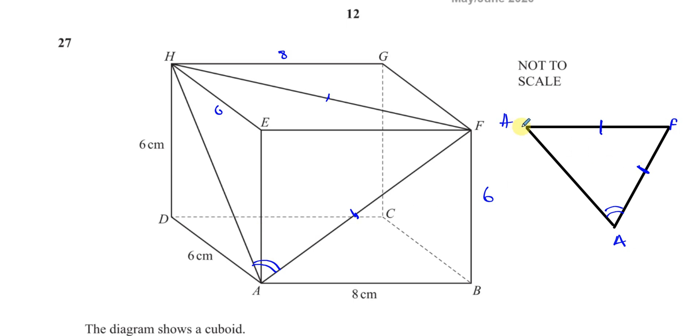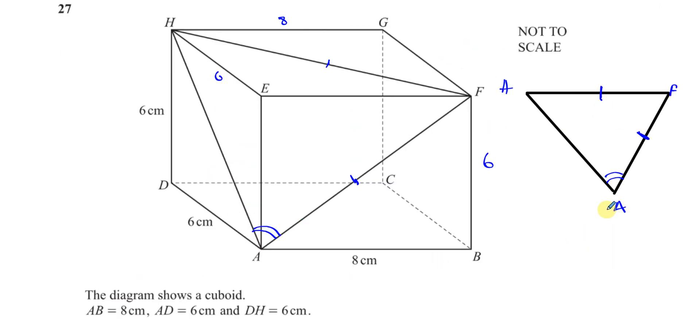We have to find this angle here. This side and this side seem to be the same length because they're both diagonals of the same dimension, basically a rectangle. Because this is 8 by 6 and here we have, this is also 8 by 6, so these diagonals will be the same length. So if we can find the length of these three diagonals, AH, HF, and FA, I can find this angle HAF.